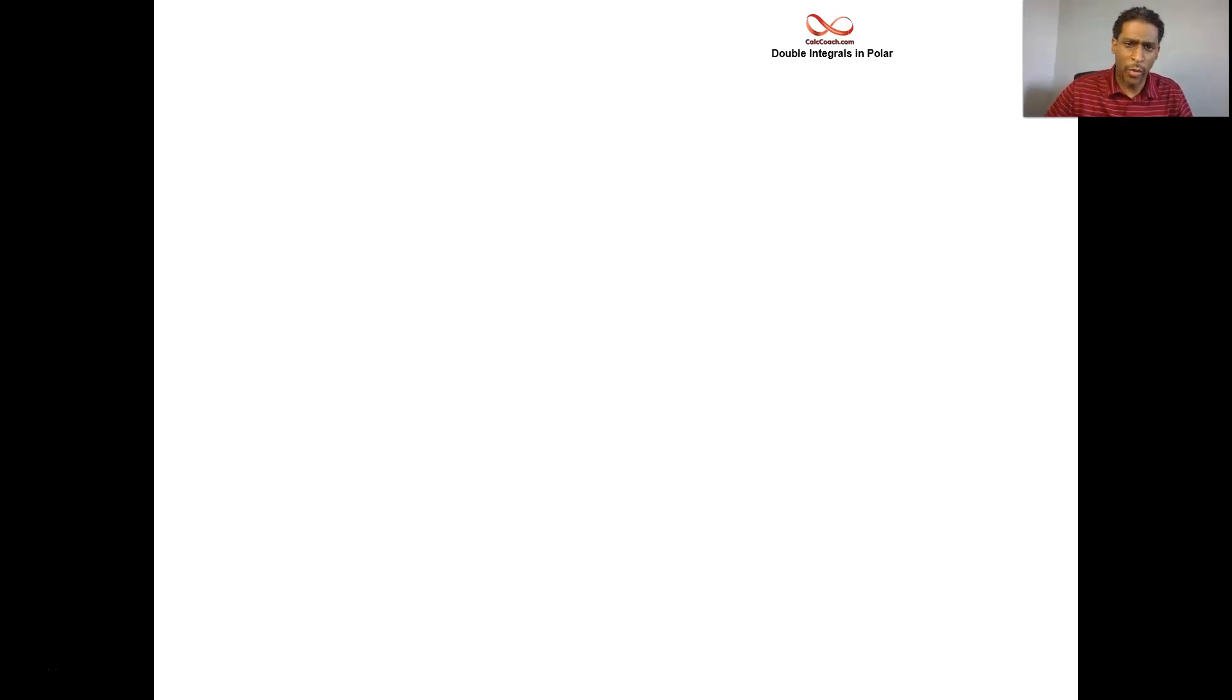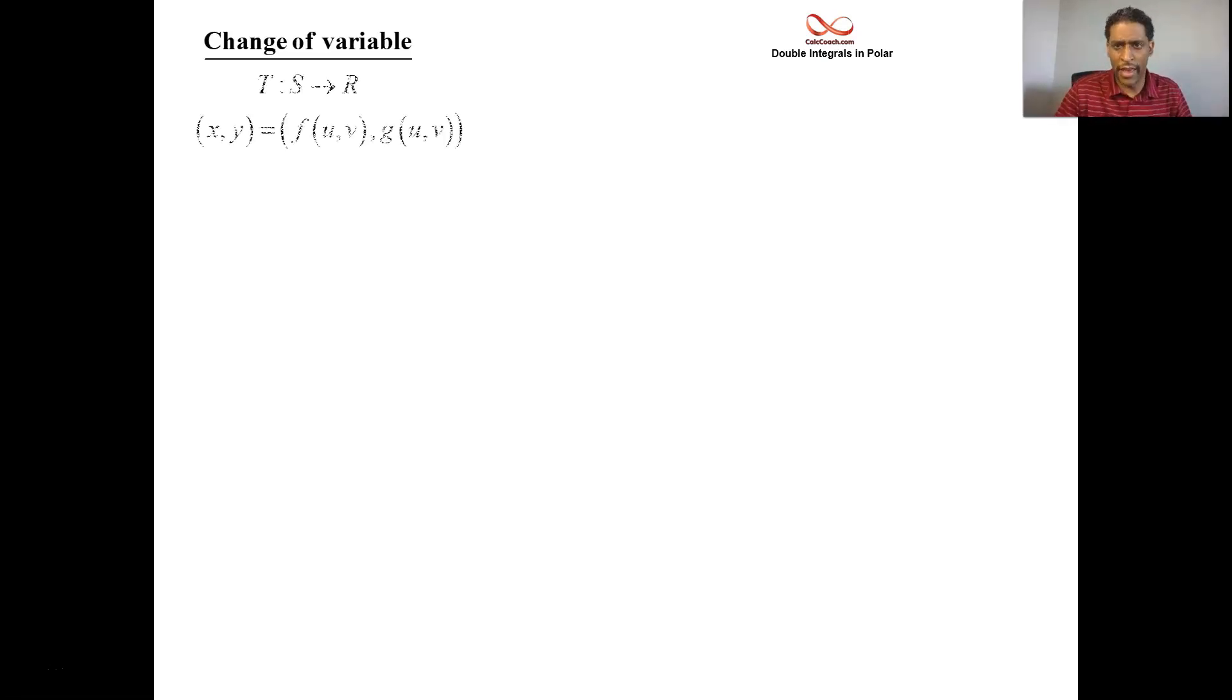So when you're doing a change of variable, what we have to account for is the fact that perhaps the area that you have in the one XY plane might not be the same area that you have in the other XY plane. What we're doing officially is mapping from XY Cartesian into a new coordinate system.